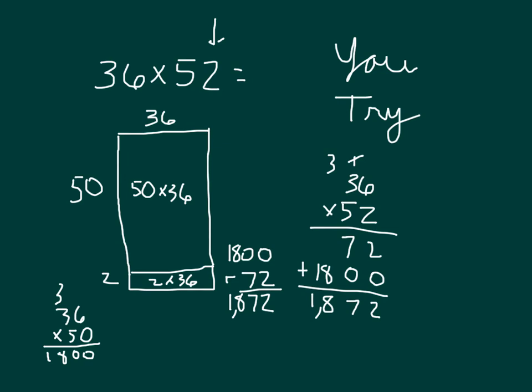36 times 2, 72, that's right here. 36 times this 5, which is worth 50, which is right here. So again, there is a connection between those two models and two approaches.